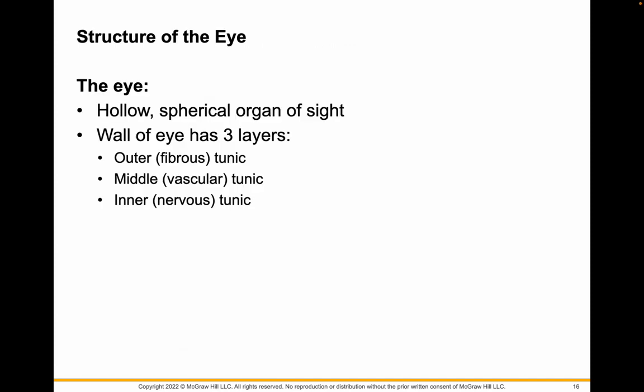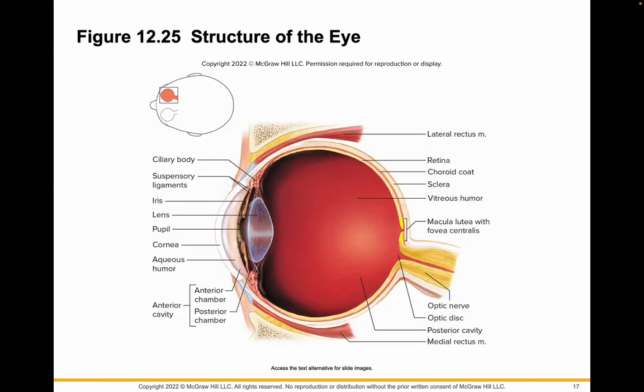The structure of the eye — it is hollow and should be spherical. We'll find out that some people don't have perfectly spherical eyes and how that changes their vision. The wall of the eye has an outer fibrous tunic, the middle layer is a vascular tunic, and the inner layer is the nervous tunic. I want you to study this picture — you'll need to know it for the test.